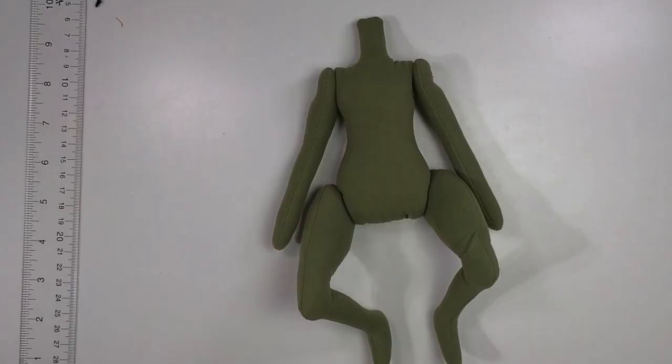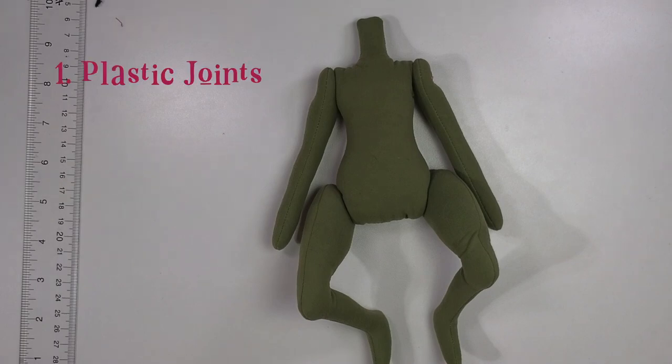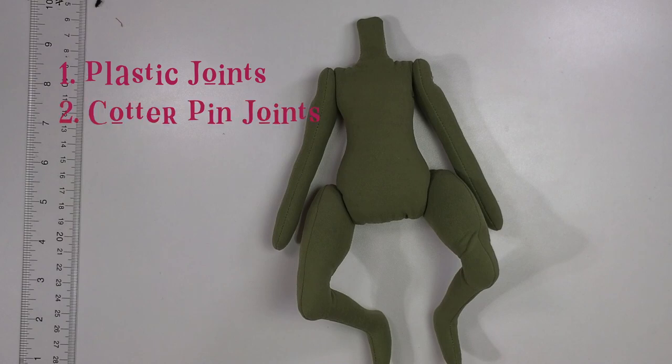So there you go. Three different ways to joint an art doll, a plushie, any kind of fabric doll. Three different joints using purchased plastic joints. You could get the hardwood and cotter pin joints. I'll link to those in the description. Or you could use buttons like I showed with the arms. So do it however you want. They all have a similar outcome.